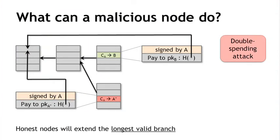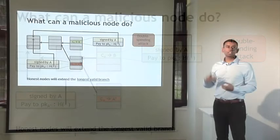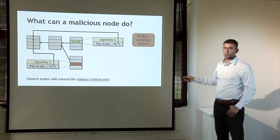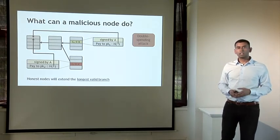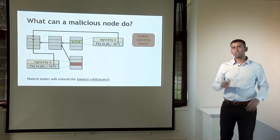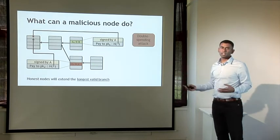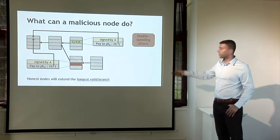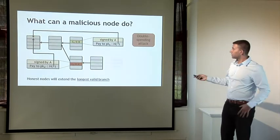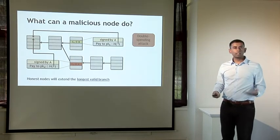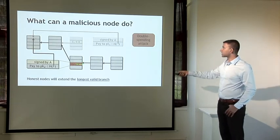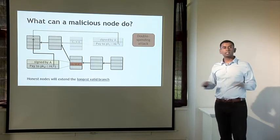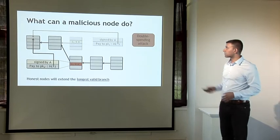Nodes often follow a heuristic of extending the block they first heard about on the peer-to-peer network, but it's not a solid rule, and because of network latency, that could easily be the other way around. So there is at least some chance that the next node to propose a block will extend the red transaction's block instead of the green one — or Alice could try to bribe or subvert that node. Let's say the next node extends the block with the red transaction. The next honest node is now much more likely to extend that block because it has become the longest valid chain. After one more block, the double spend is looking likely to succeed. The original block with Alice's payment to Bob gets completely ignored by the network — this is called an orphan block. This is an example of a successful double spend.